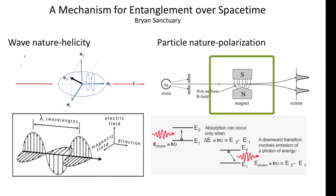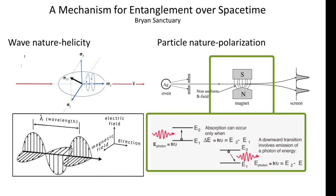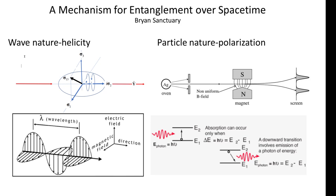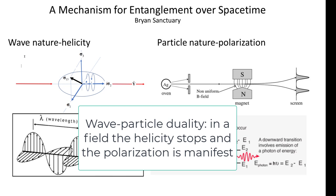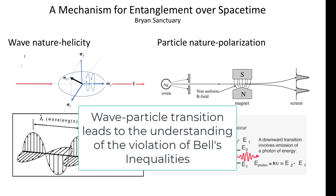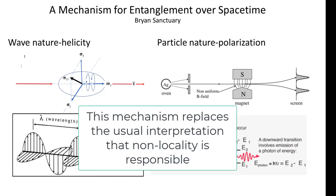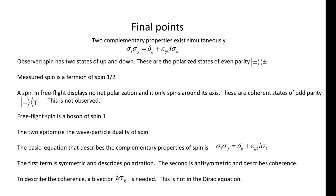Upon encountering a field, the particle nature emerges, like emission and absorption of the energy by a photon, so a spin one-half displays similar behavior after the two magnetic states are split by the Zeeman effect. When a free-flight spin encounters a field or filter, the wave nature stops, and the spin evolves into the usual spin one-half that we observe. It is this transition from wave to particle that is responsible for the violation of Bell's inequalities. The mechanism for this violation is how that free-flight spin of one decouples into the usual spin one-half we observe. This is far from the usual explanation that declares the process is due to non-locality and its associated quantum weirdness.